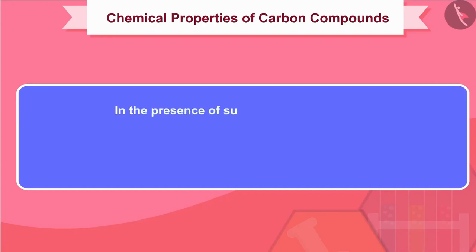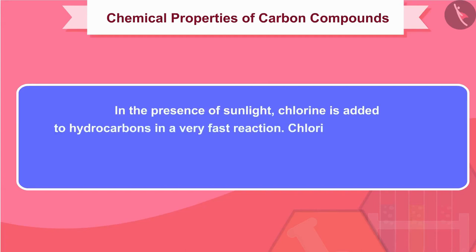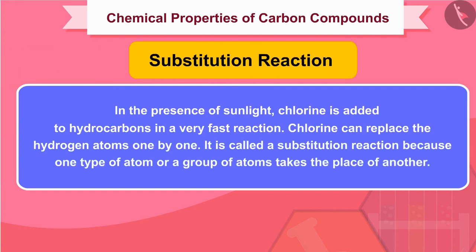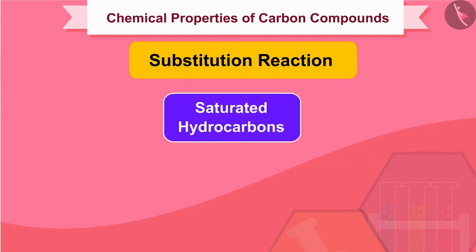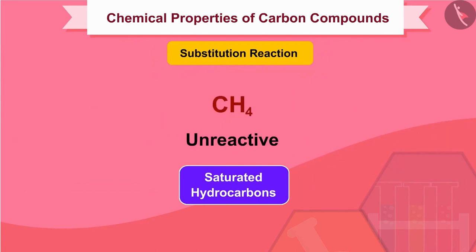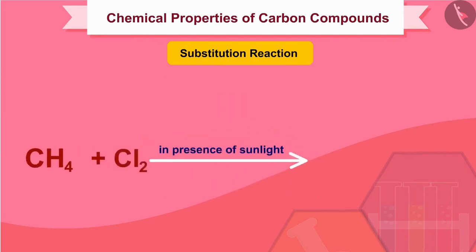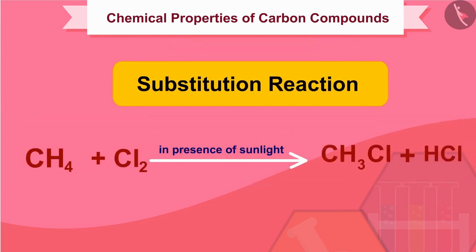In the presence of sunlight, chlorine is added to hydrocarbons in a very fast reaction. Chlorine can replace the hydrogen atoms one by one. It is called a substitution reaction because one type of atom or group of atoms takes the place of another. Saturated hydrocarbons are quite unreactive and do not react with many substances, but they undergo substitution with chlorine in the presence of sunlight. Since this substitution is carried out by chlorine, it is called chlorination.